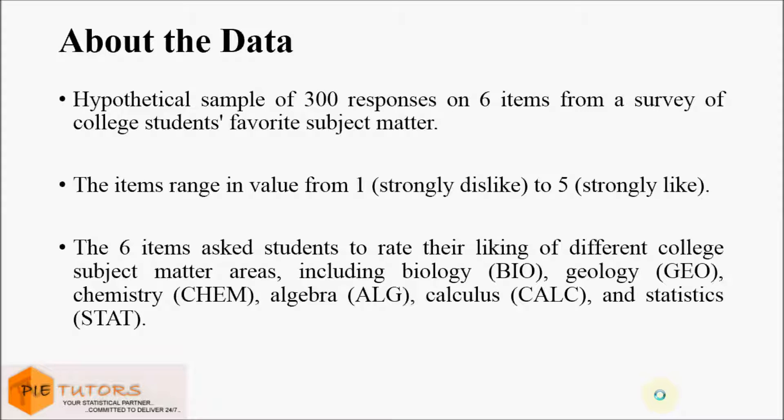The dataset in this example contains hypothetical responses from 200 students on six items from a survey on school students. The six items ask students to rate their liking for different subjects including biology, geology, chemistry, algebra, calculus, and statistics. The value of each item ranges from one, which shows strong dislike, to five, which shows strong liking for the subject.